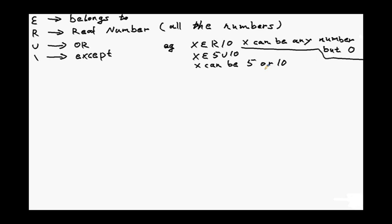Let's write a note here. X can be any number but 0. The second one means x can only be 5 or 10.